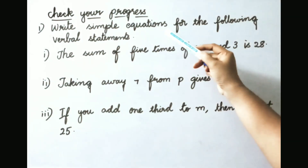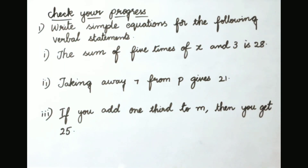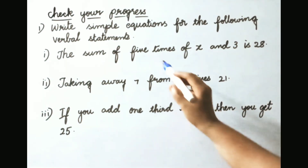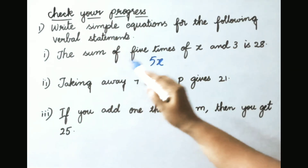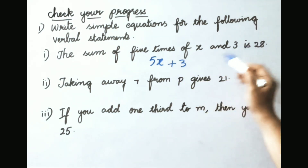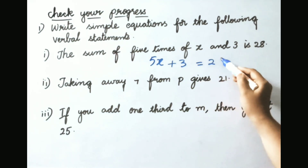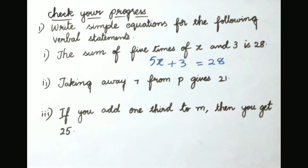Check your progress: write simple equations for the following verbal statements. First: the sum of 5 times of x and 3 is 28. 5 times of x is 5x, sum of 5 times of x and 3 is 5x plus 3 equals 28. So the simple equation is 5x plus 3 equals to 28.